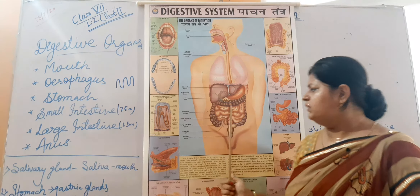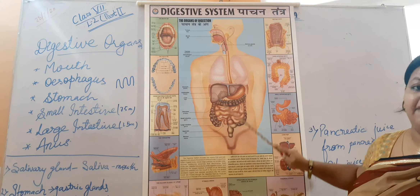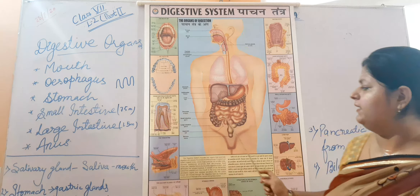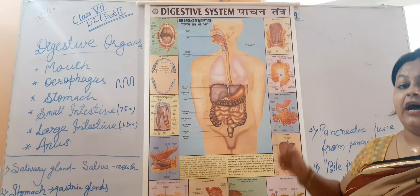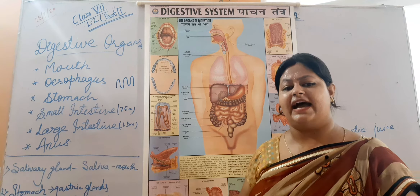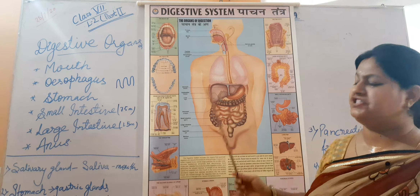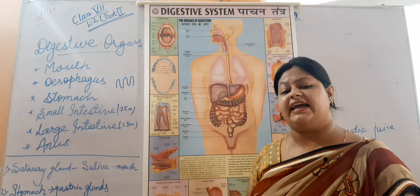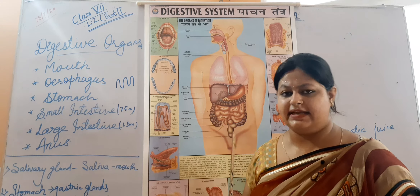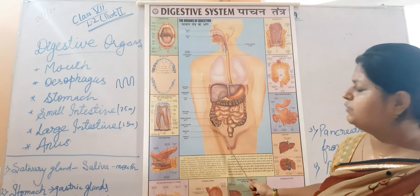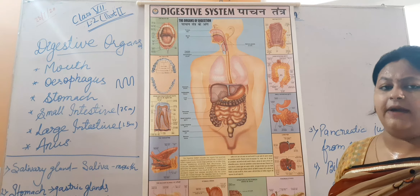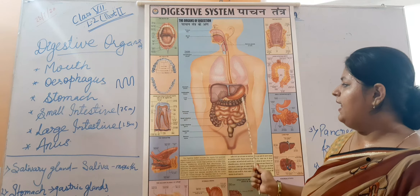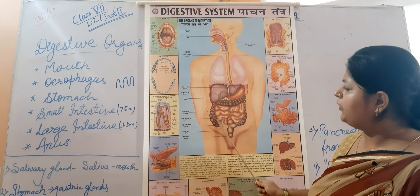When food reaches the small intestine and the process of absorption through bile is complete, the leftover food becomes undigested food, because almost all digestion was completed in the small intestine. Whatever is not digested — the undigested food — is then transferred to the large intestine.